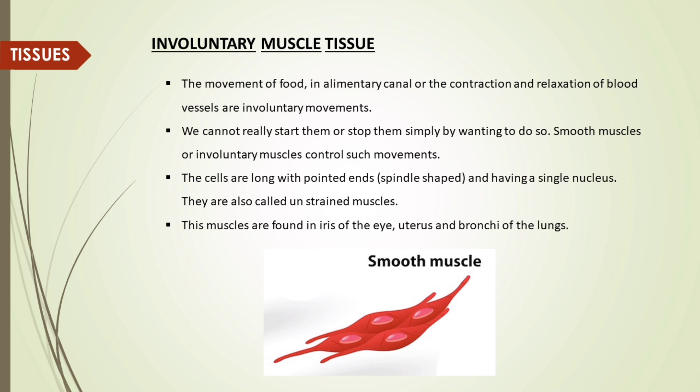Involuntary muscle tissue: the movement of food in the alimentary canal or the contraction and relaxation of blood vessels are involuntary movements. We cannot start them or stop them simply by wanting to do so. Smooth muscles or involuntary muscles control such movements. The cells are long with pointed ends, spindle-shaped, and have a single nucleus. They are also called unstriated muscles. These muscles are found in the iris of the eye, uterus and bronchi of the lungs.